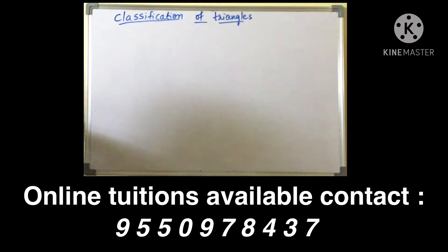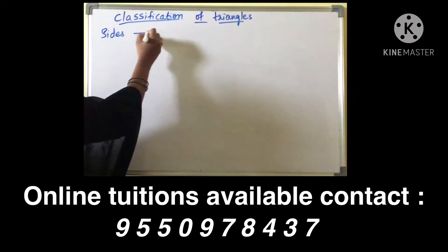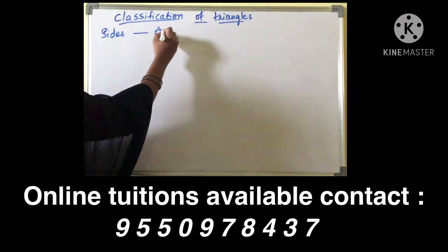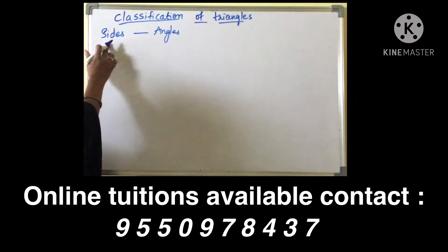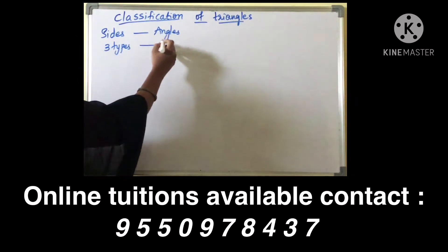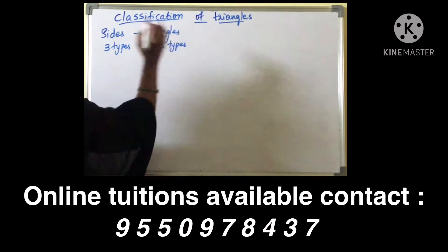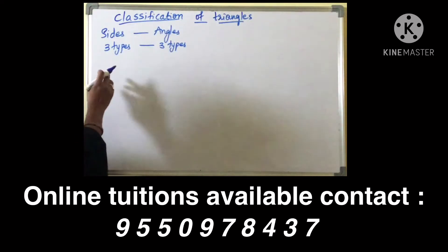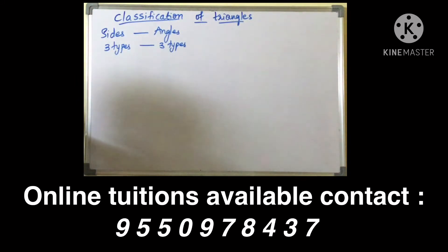We are having classification of triangles on the basis of sides and angles. On the basis of sides we are having three types of triangles, and on the basis of angles we are having three types of triangles. Now we are going to discuss one by one. First, on the basis of sides we are going to discuss.